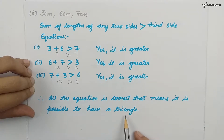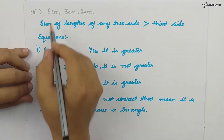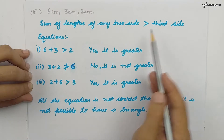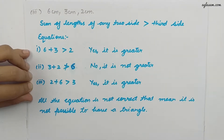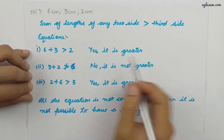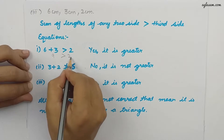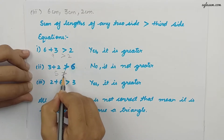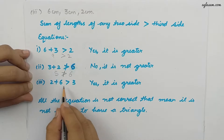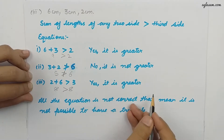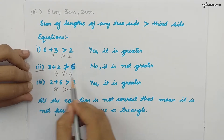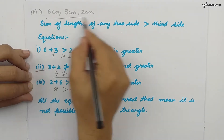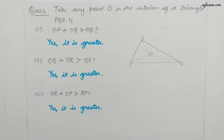Moving to the third part of the question, we have measurements 6 cm, 3 cm, and 2 cm. Applying the formula: 6 plus 3 equals 9, which is greater than 2 — yes. But 2 plus 3 equals 5, which is not greater than 6. And 2 plus 6 equals 8, which is greater than 3. Since the second equation is not correct, it is not possible to have a triangle with these measurements.